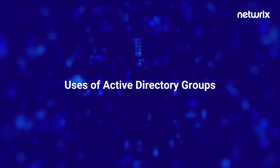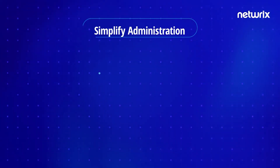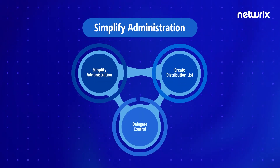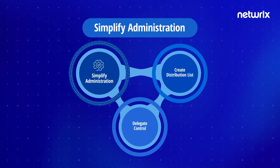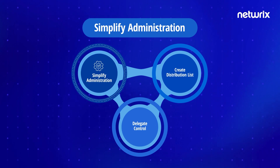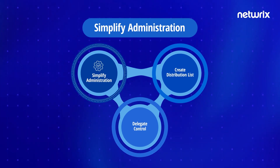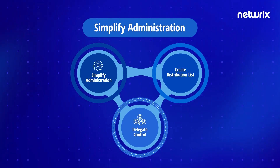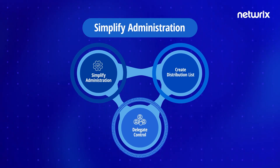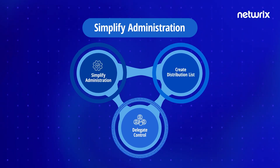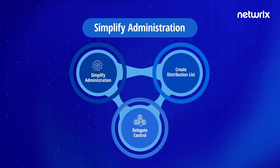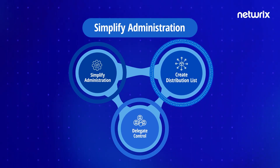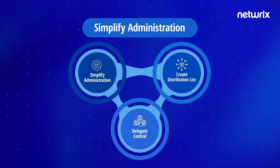You can simplify administration by assigning shared resource permissions to Active Directory groups rather than individual users. When you assign permission to a group, all its members have the same access to the resource. You can also delegate control by assigning user rights to a group using group policies, and in the future you can add new members to the group who need those permissions. One of the major uses of Active Directory groups is to create email distribution lists.